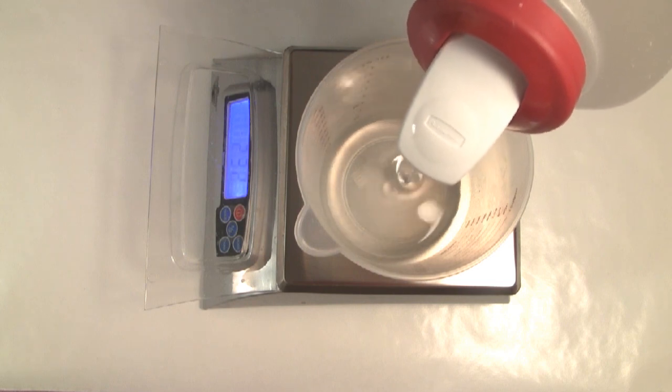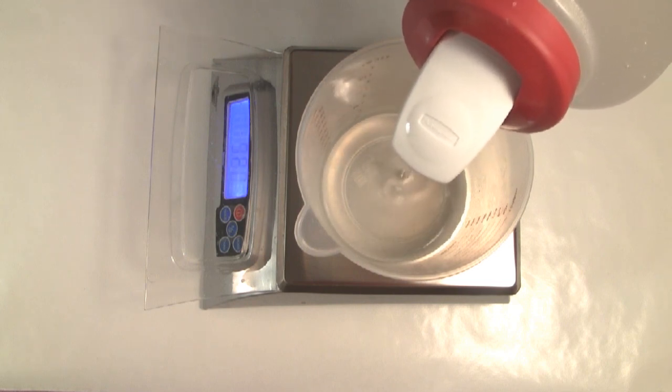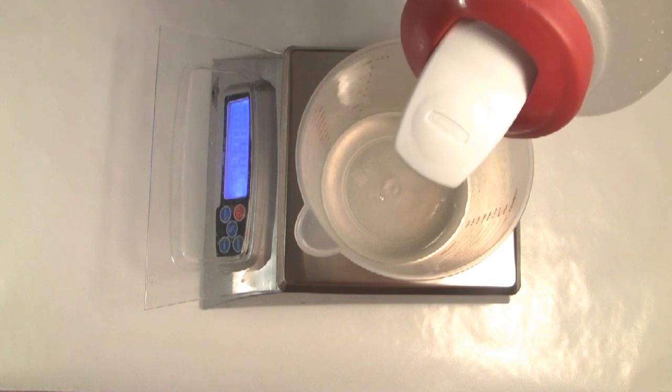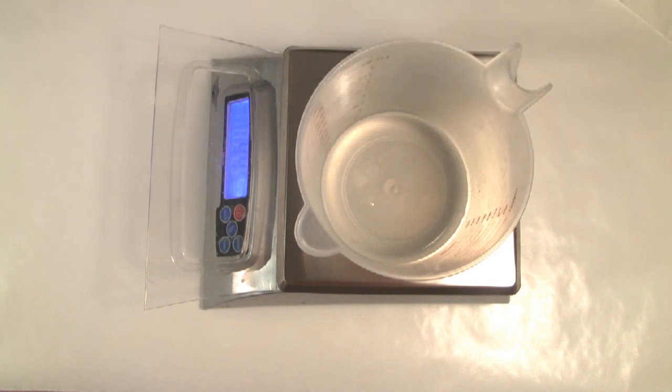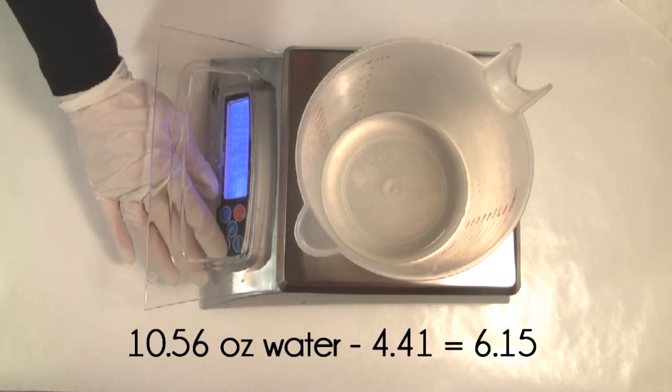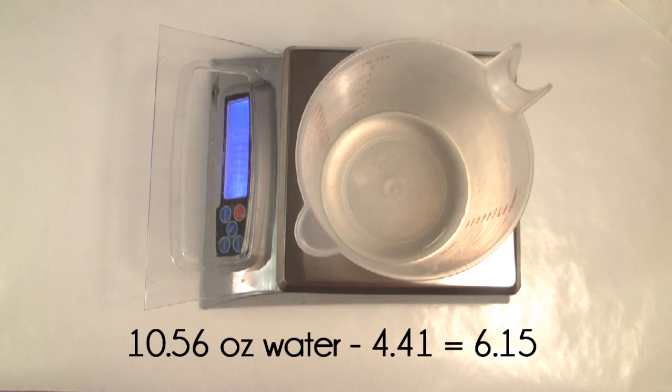Now in our cup, we are still short the correct amount of water. The next step is to subtract the lye weight from the formula water weight. 10.56 minus 4.41 equals 6.15. Therefore, we add the additional water to the pre-made lye solution.